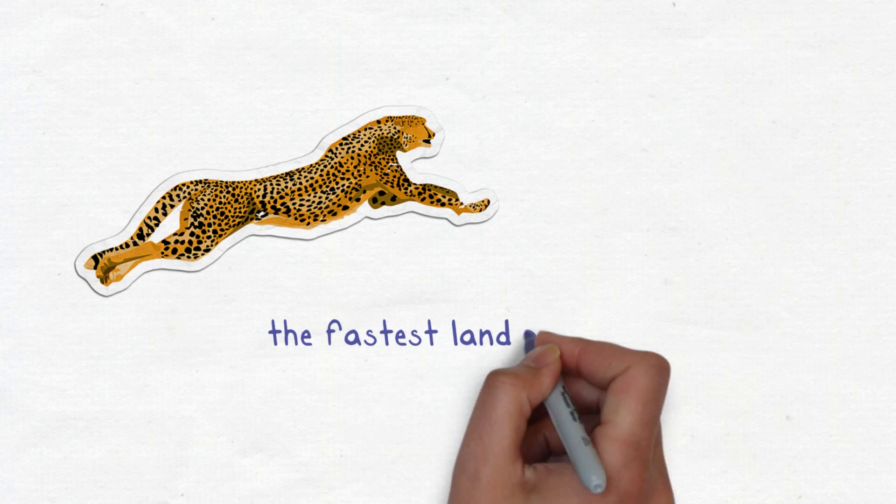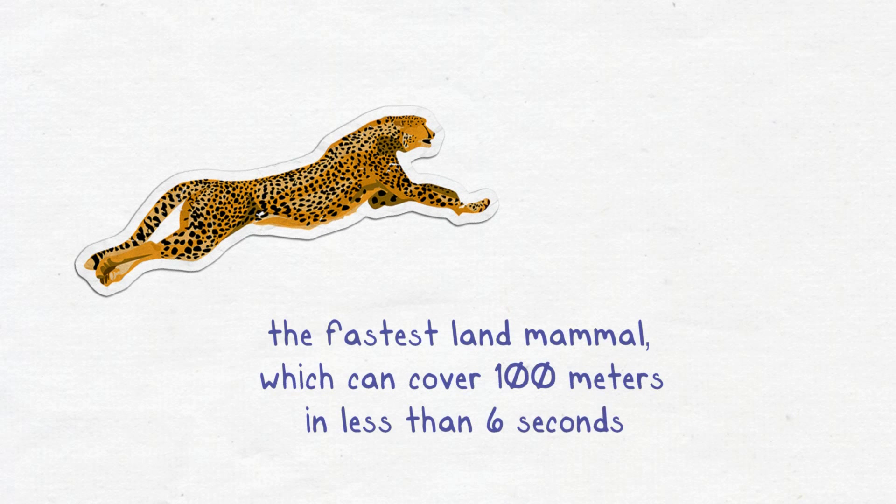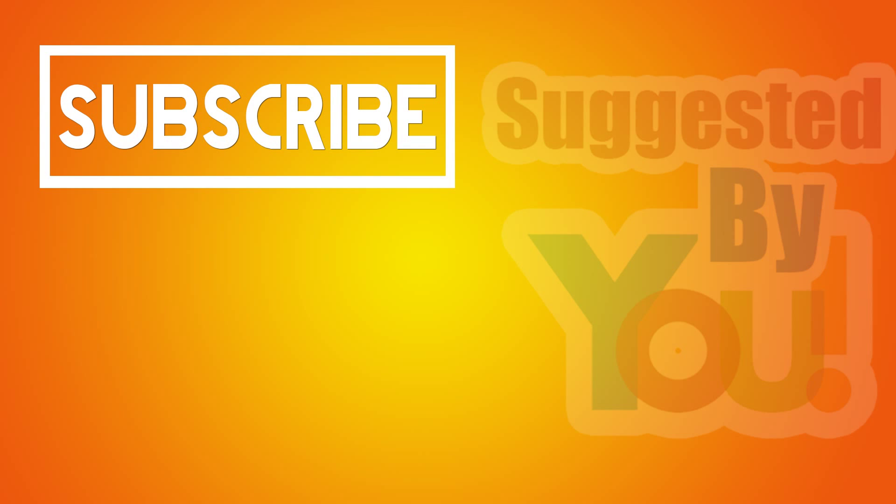That speed still won't allow us to outrun an adult cheetah, the fastest land mammal, which can cover 100 meters in less than 6 seconds.